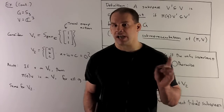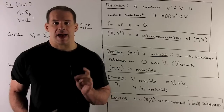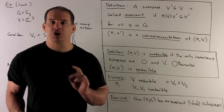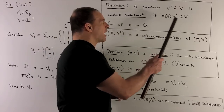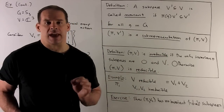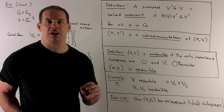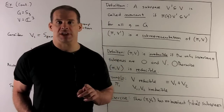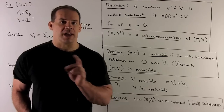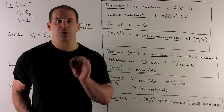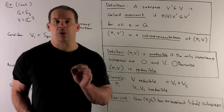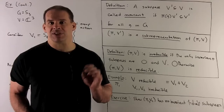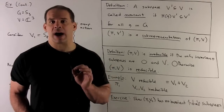That's going to motivate our next definition. A subspace V′ of V is invariant if, for all g in the group, π(g) carries V′ back into itself. Then we'll say that (π, V′) is a sub-representation of (π, V). Now, if we have any representation, we're going to have two invariant subspaces always: {0} and V itself. If there are no other invariant subspaces, we'll say that (π, V) is irreducible; otherwise it's reducible.